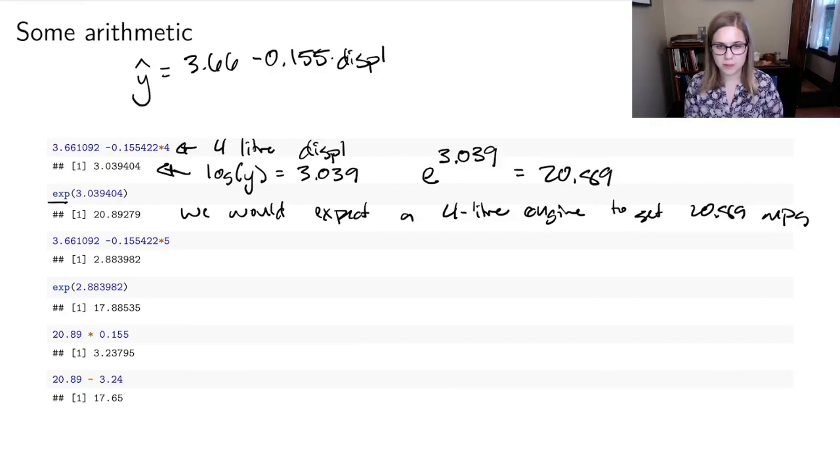So we would expect a four liter engine to get 20.89 miles per gallon. That's our prediction. And then we're going to do a one unit increase in the explanatory variable. So I'm going to plug in five for my displacement, five liter displacement. And that comes out to be 2.88. So again, I want to do e to the 2.88, and that turns out to be 17.88.